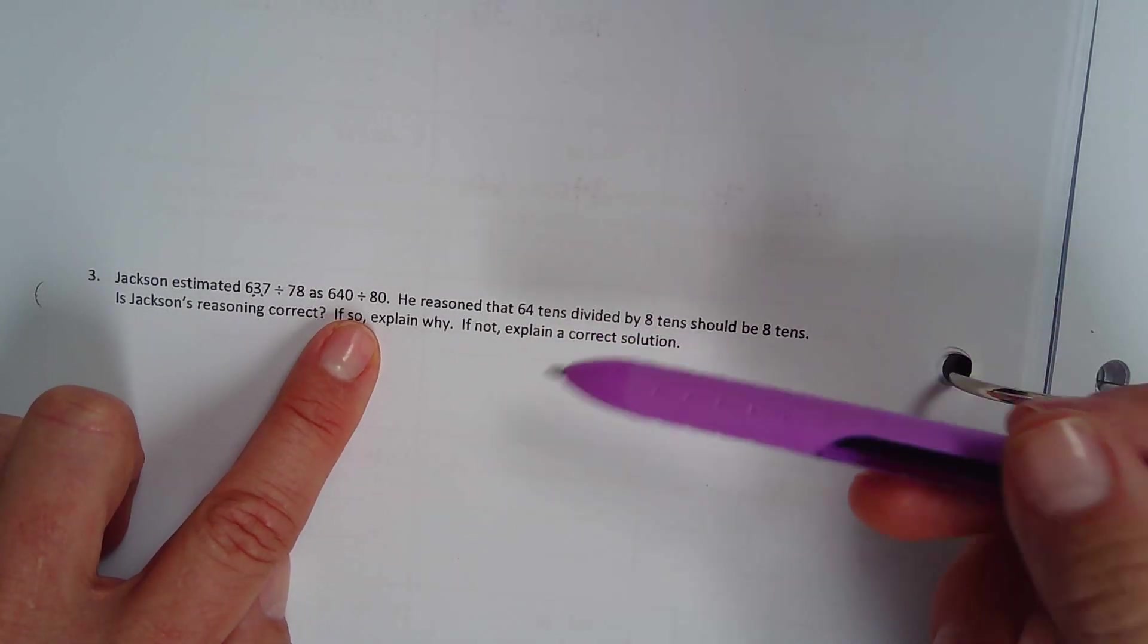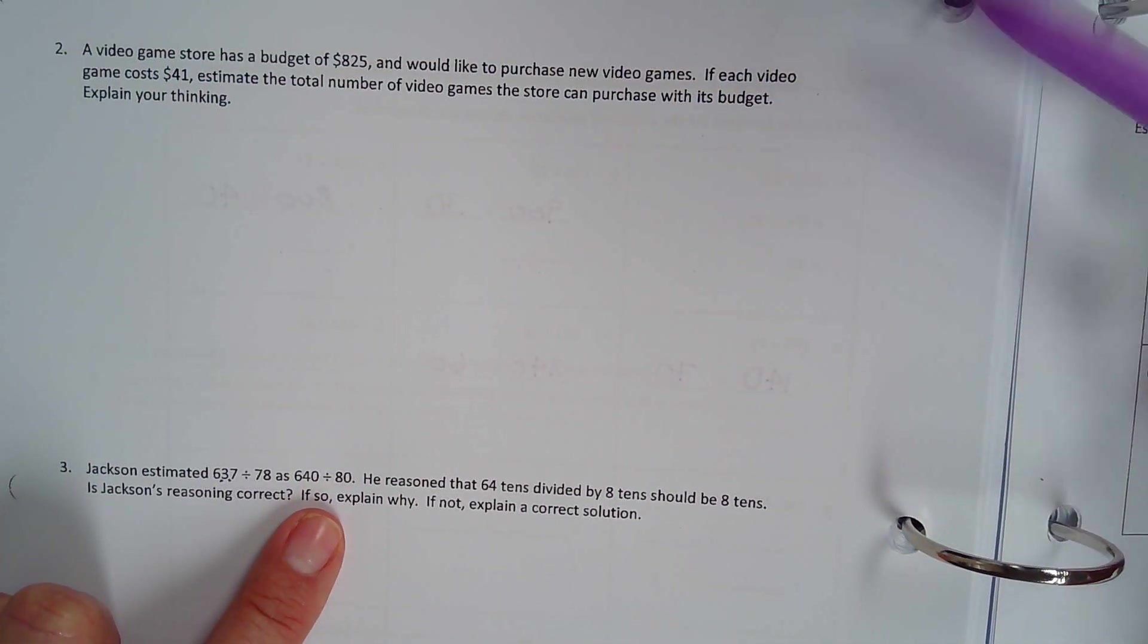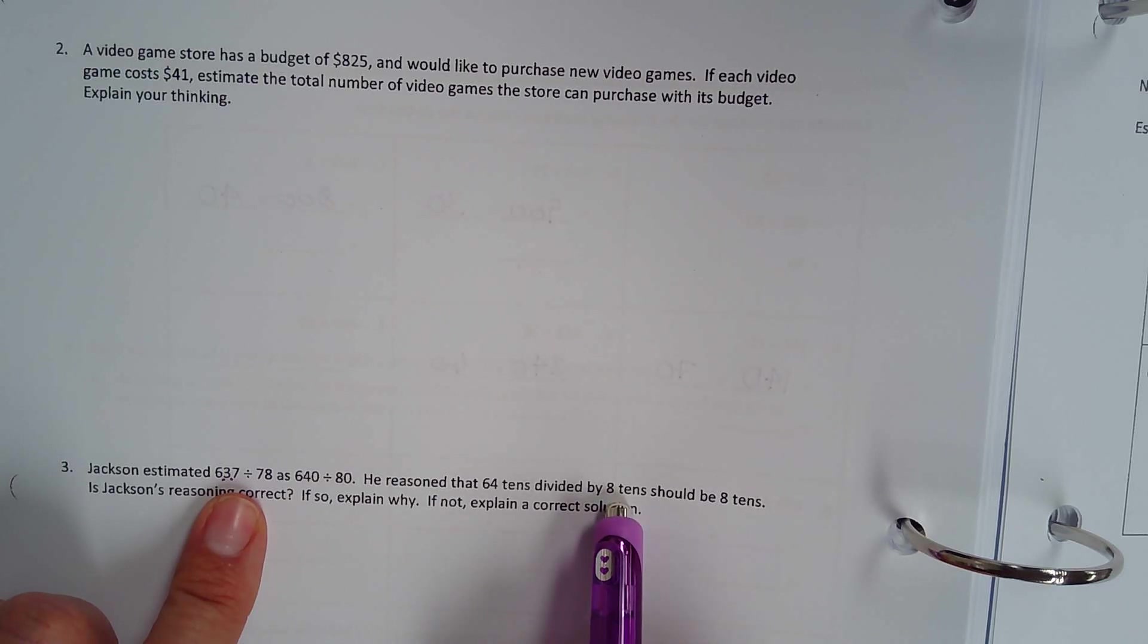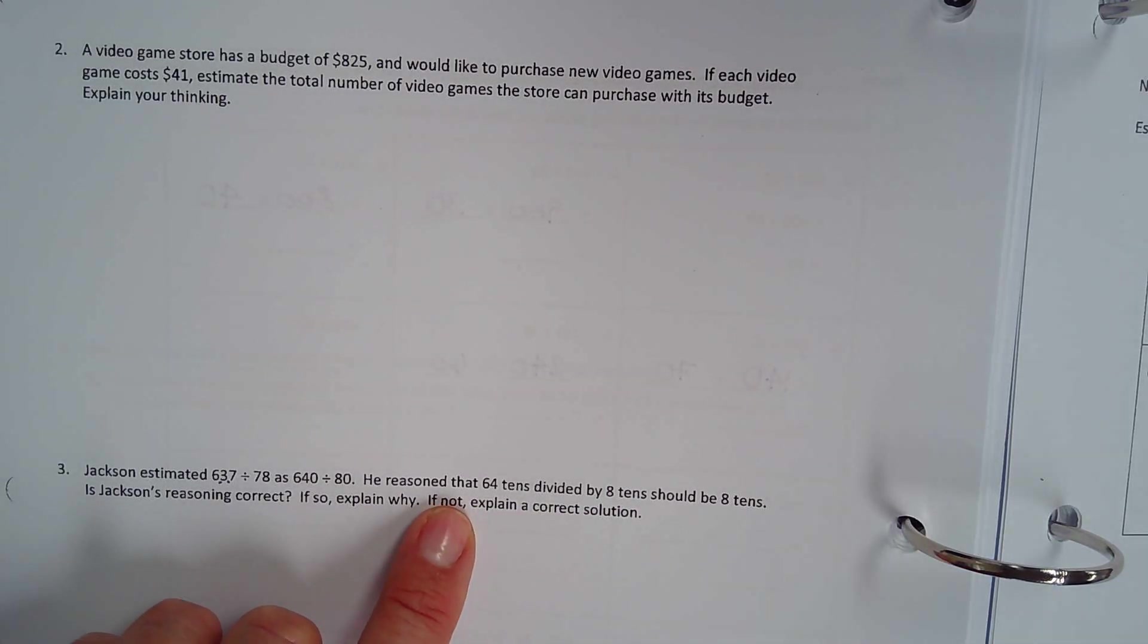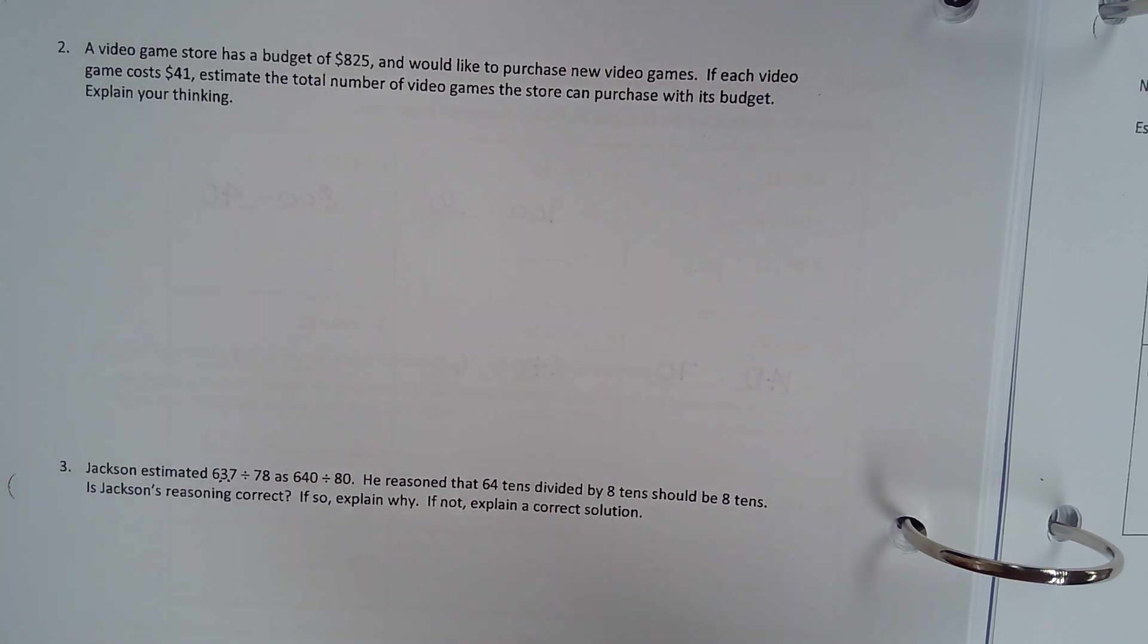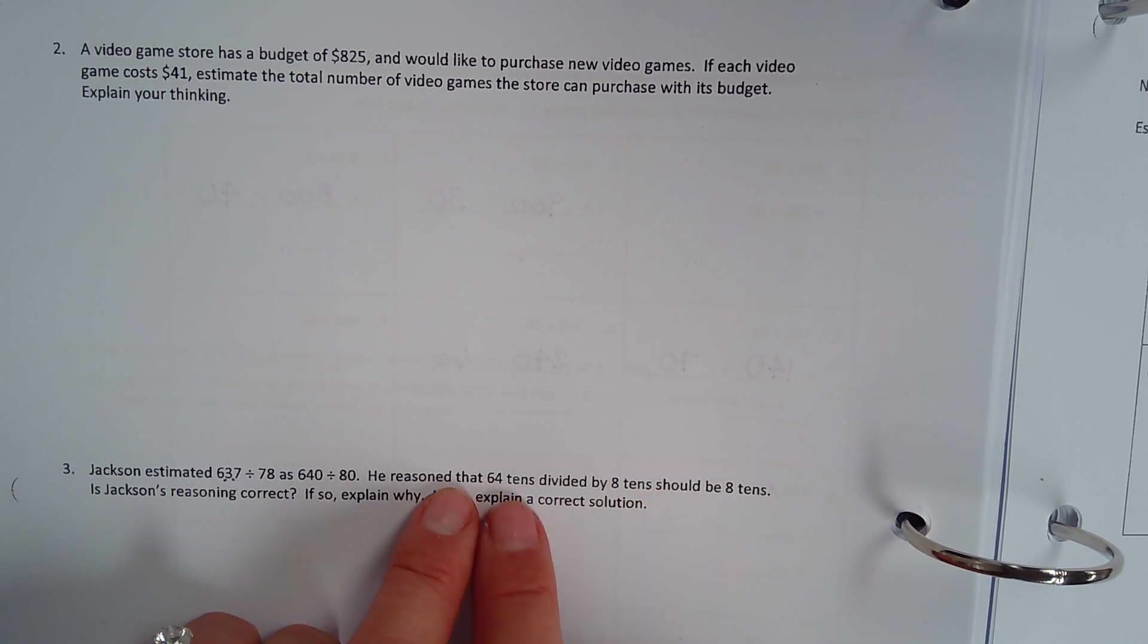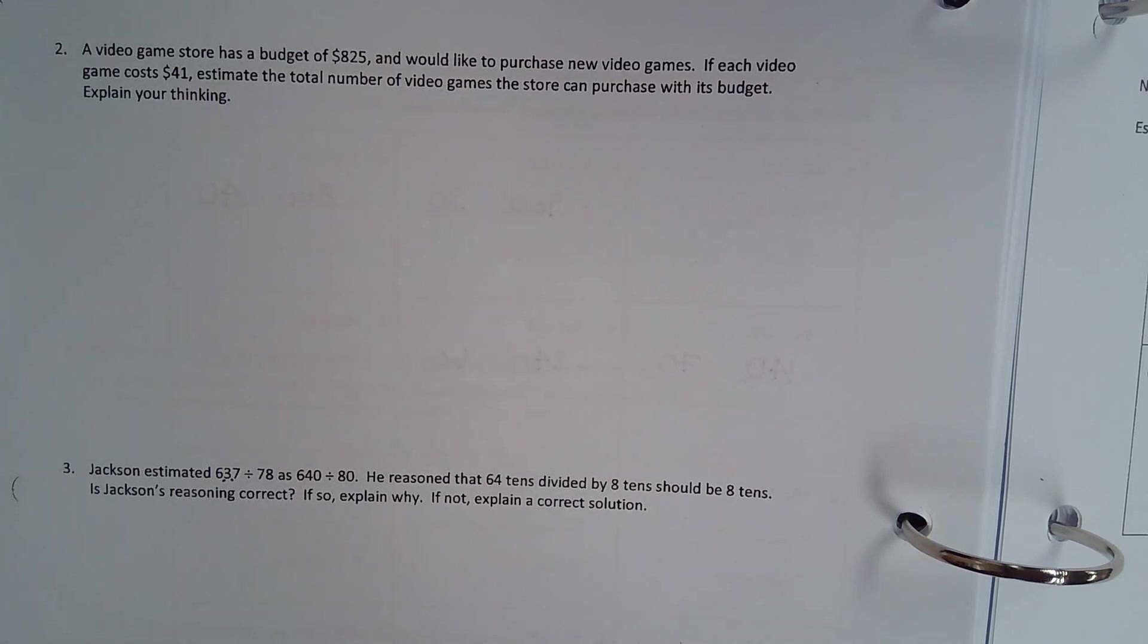He reasoned. Now, look. Look at the way he reasoned because you are going to have to reason in the same way in the question above. He explained, he reasoned that 64 tens divided by 8 tens should be 8 tens. That would be a beautiful explanation. Hint, hint. Is Jackson's reasoning correct? If so, explain why. If it's not, correct his thinking. But this right here would be a great way to explain your thinking. That how many 10s divided by how many 10s should give you about how many 10s. That is using your reasoning skills. Okay?